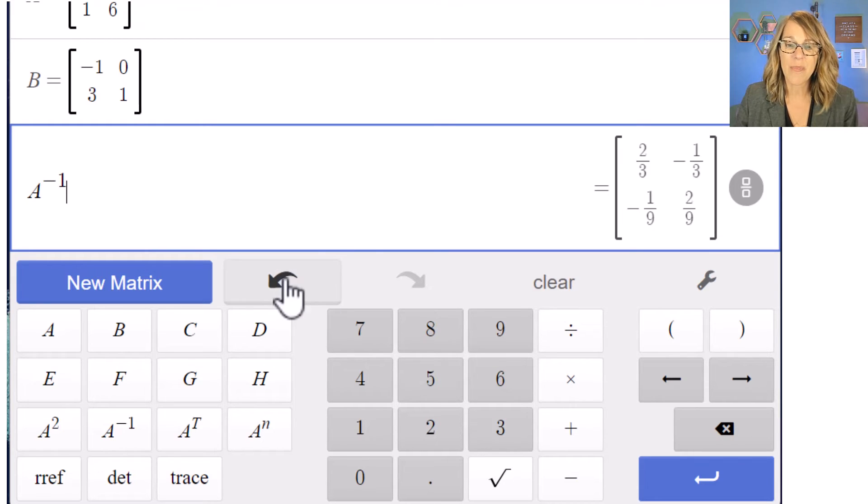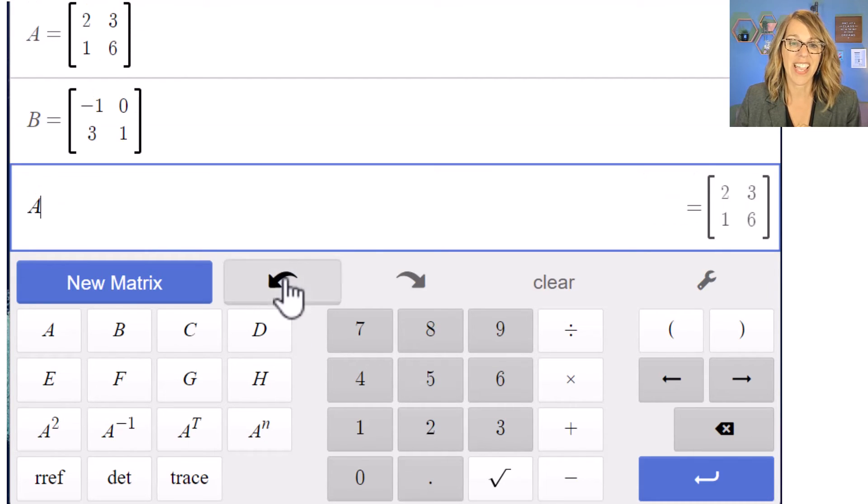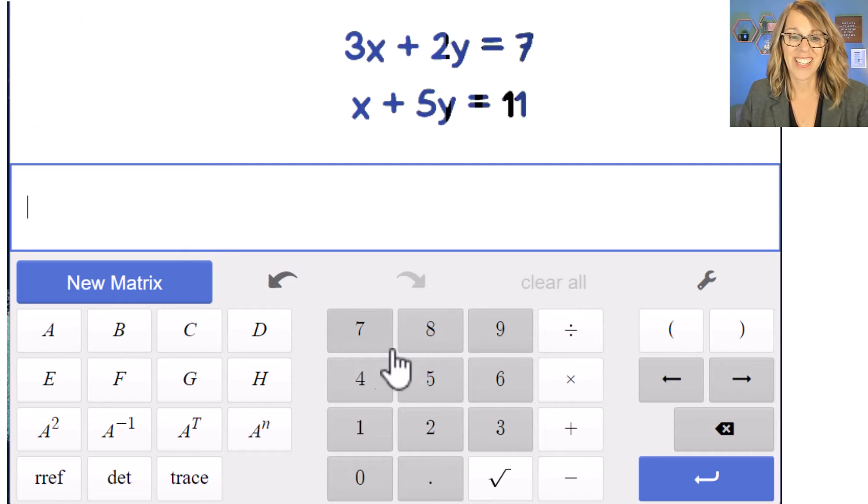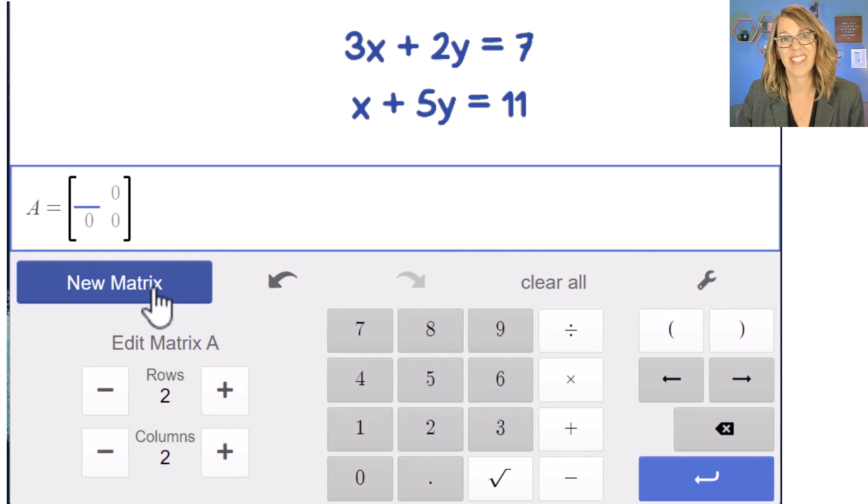Now I'm going to clear what I've got here and I am going to do a row reduced echelon form. Let's go ahead and hit clear all. Let's say that I want to solve this system. I can put it in as a new matrix. I need two rows and three columns for this one. Let's go ahead and put in those coefficients.